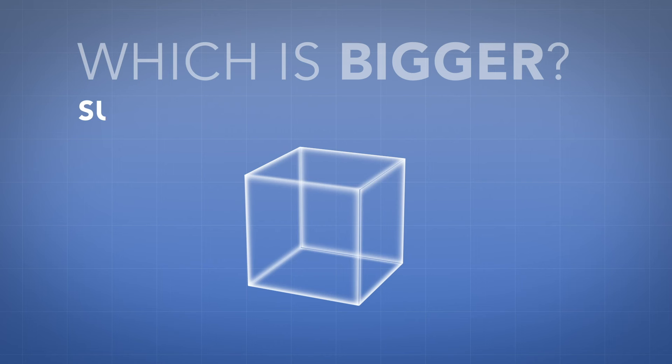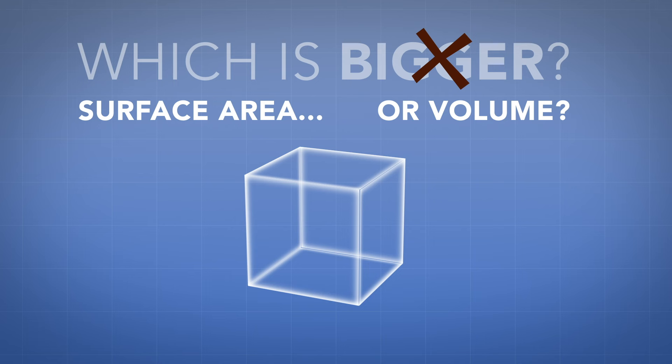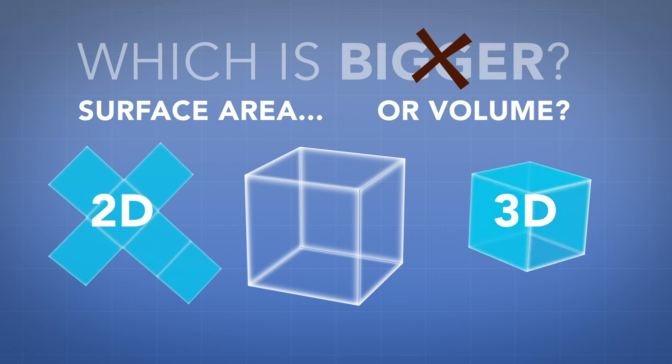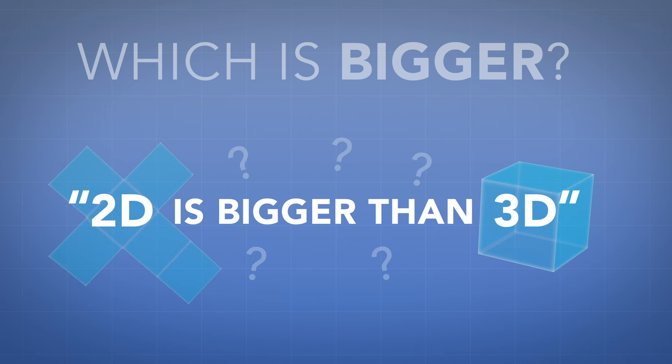which is bigger, the surface area of this cube or the volume of this cube? Hopefully you've realized that this question doesn't make any sense. Surface area measures a two dimensional surface and volume measures three dimensional space. What does it mean to say a chunk of space is bigger than a chunk of area? It means about the same as saying a piece of time is longer than a piece of length. Nothing at all.